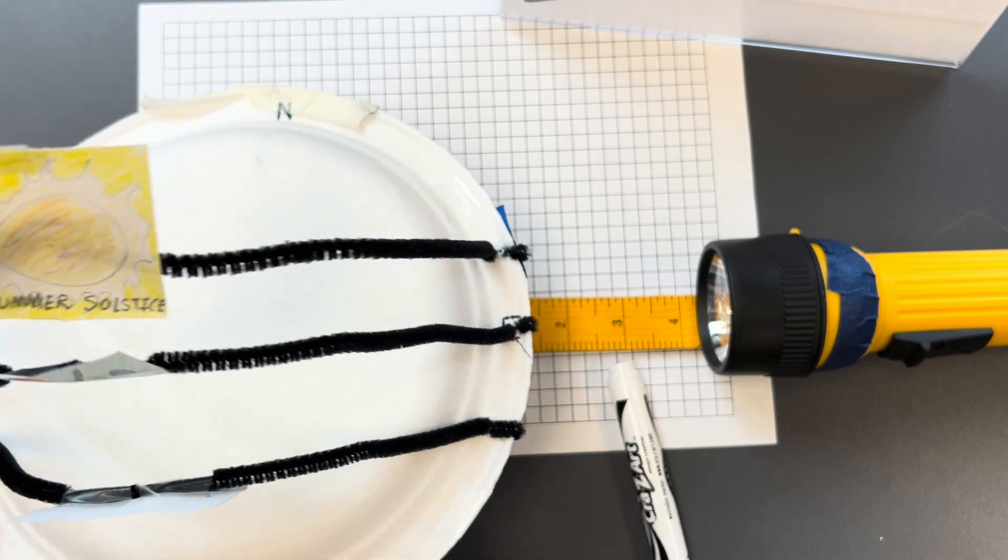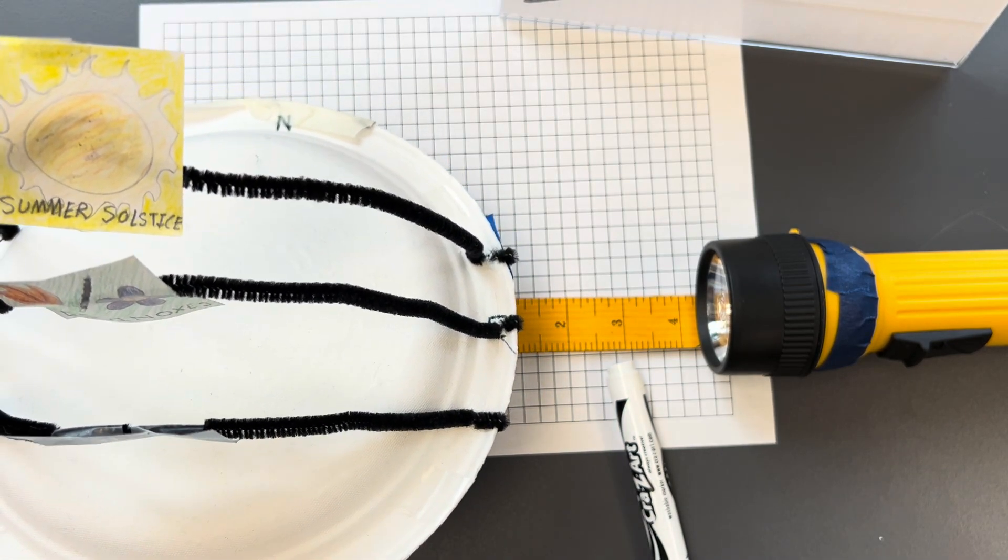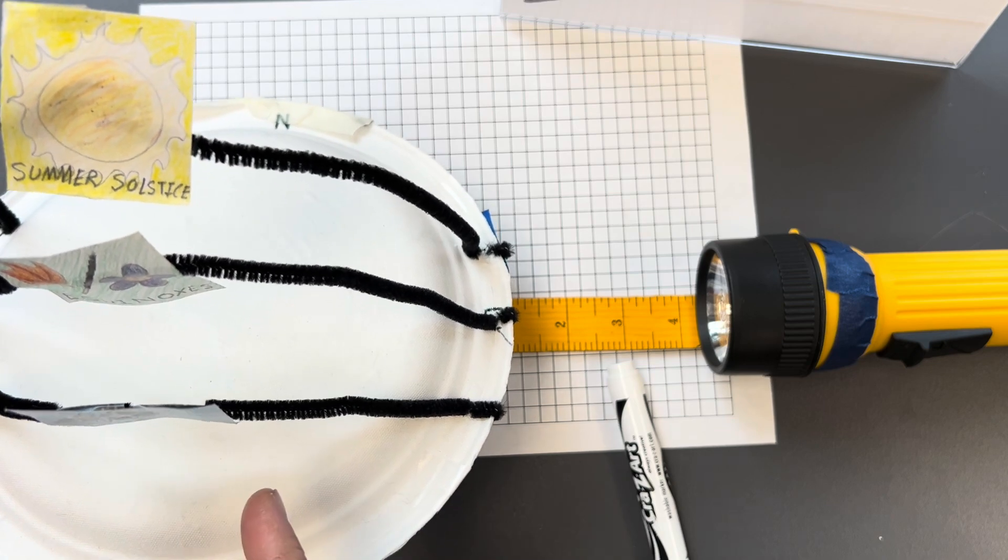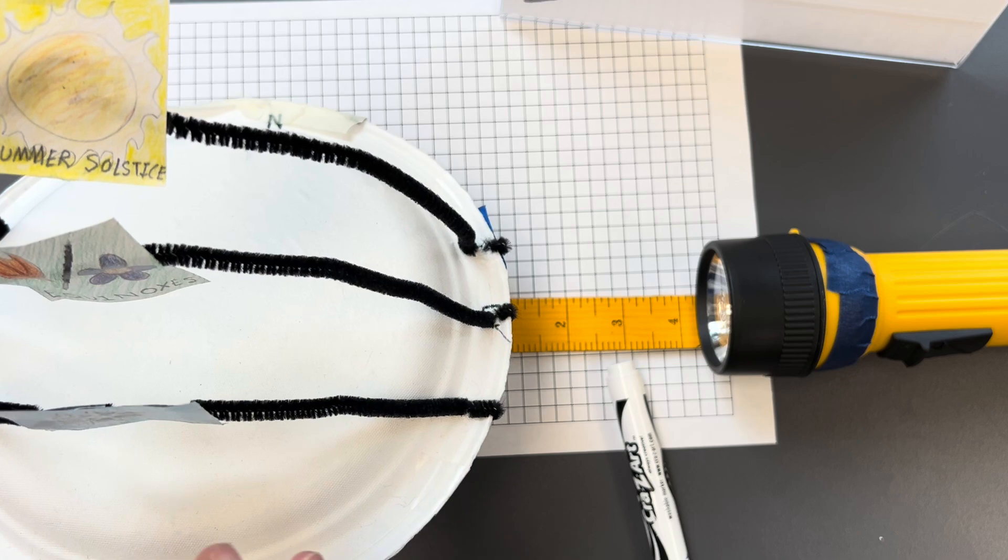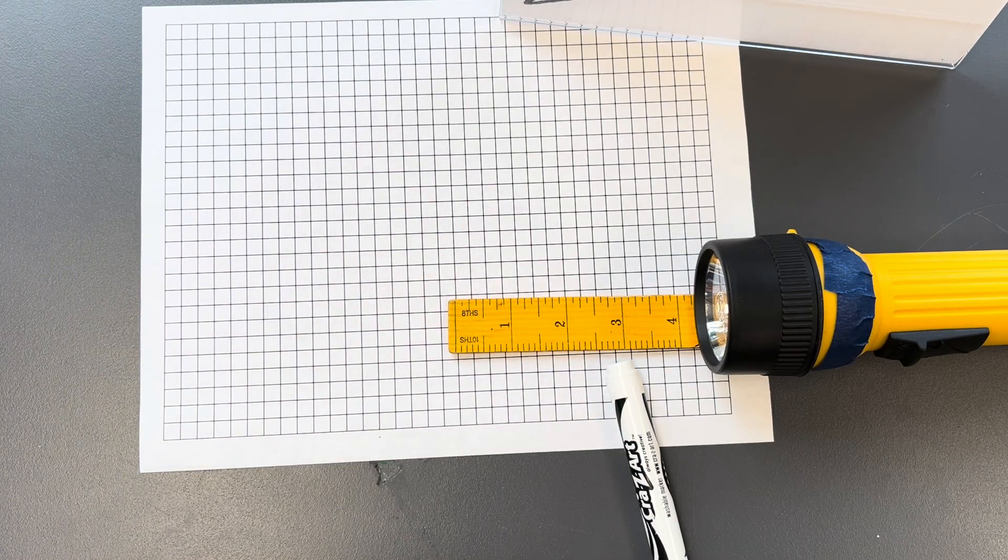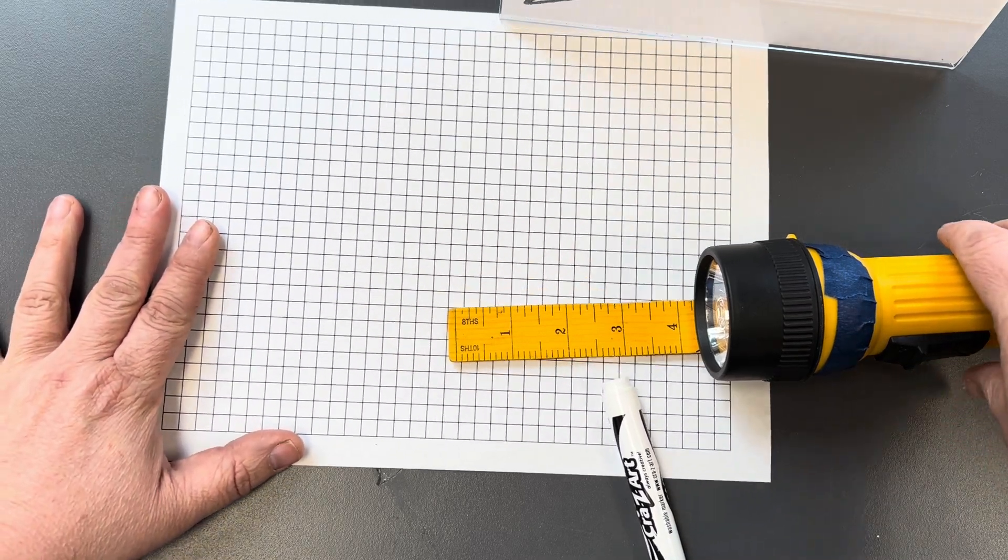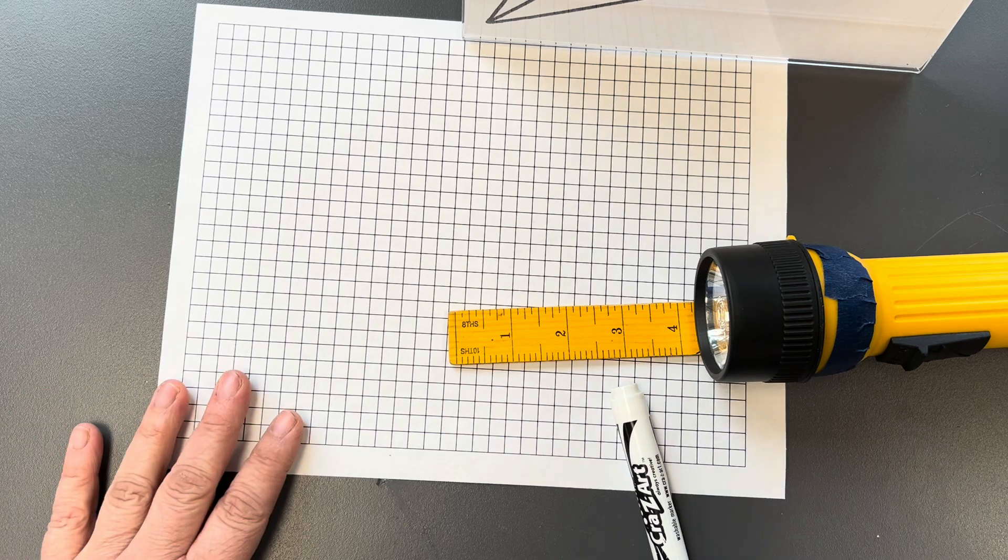So in other words, during the summer, the days are longer, there's more daylight hours. During the winter, they're shorter. During the fall and spring, they're in between. And also, the elevation of the sun above the horizon is higher in the summer than it is in the fall, spring, and then winter. It's lowest in the winter.